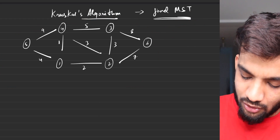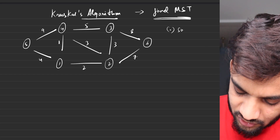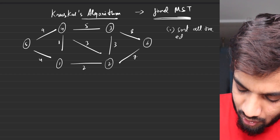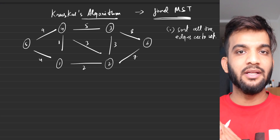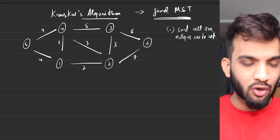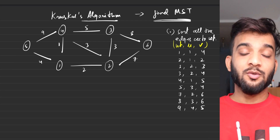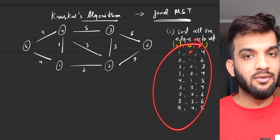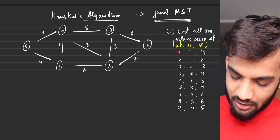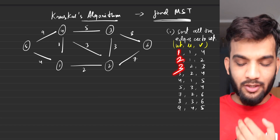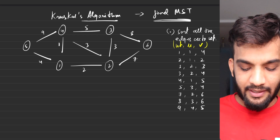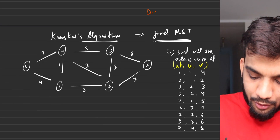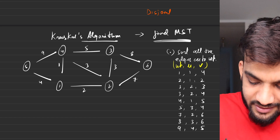The first task you need to do is sort all the edges — remember this — sort all the edges according to weight. That is very, very important. So let's quickly write down all the edges and sort them by weight. Once sorted, you'll find the minimum weight at the front and it keeps on increasing.